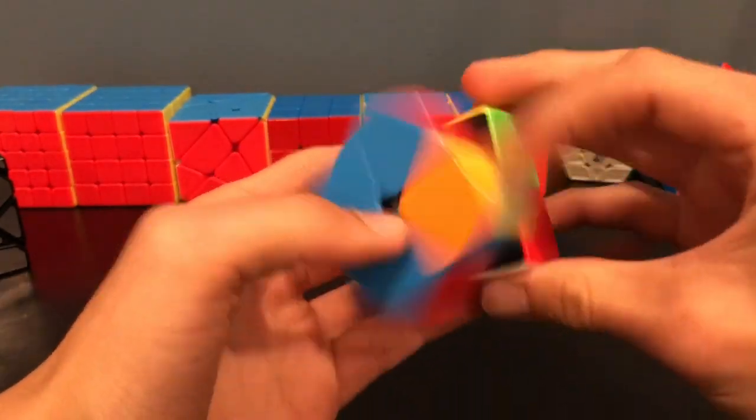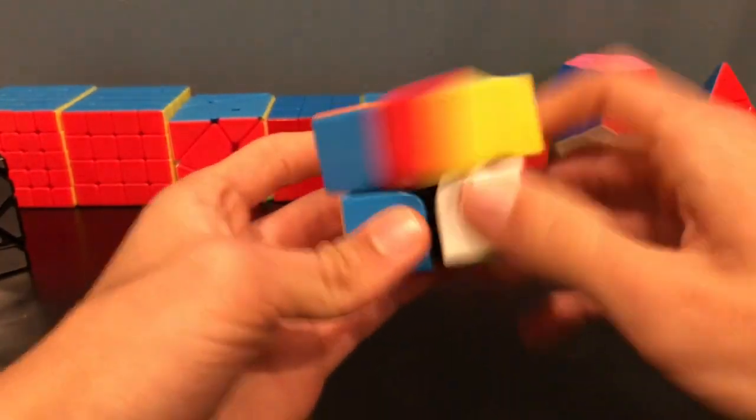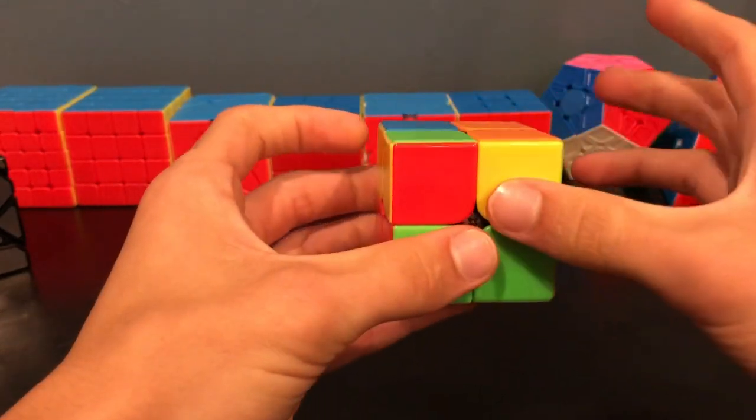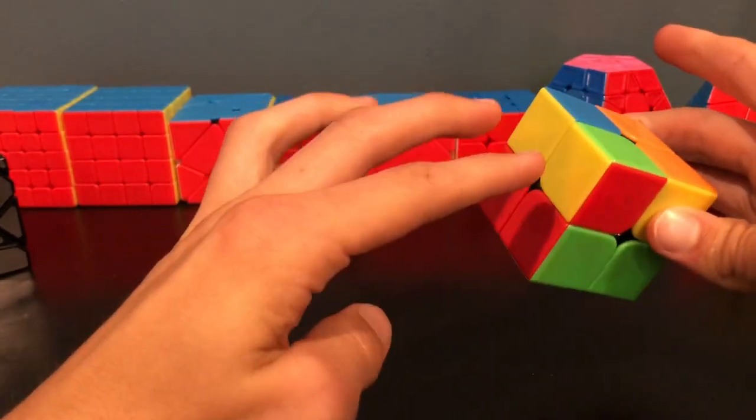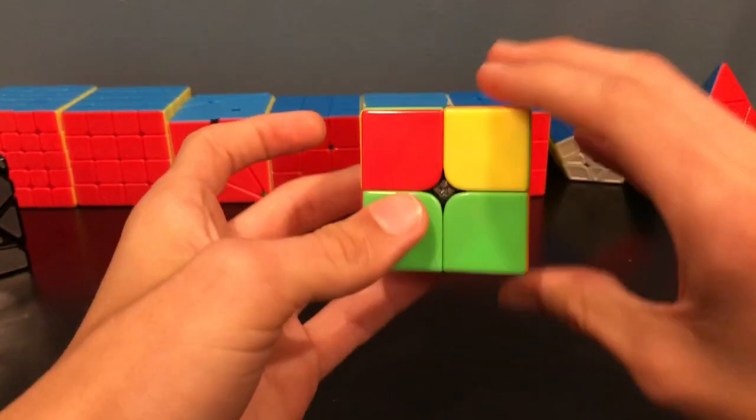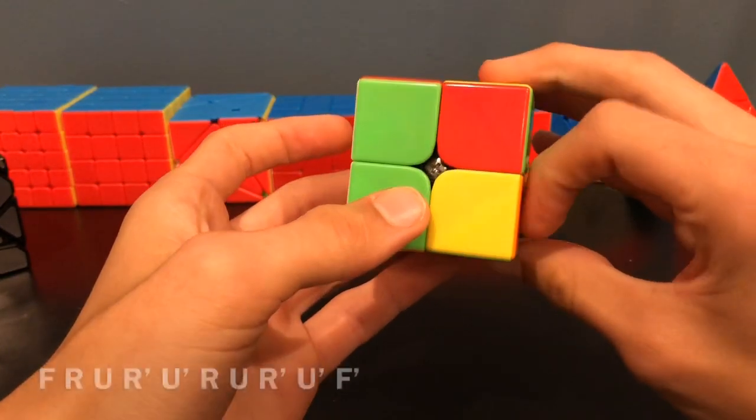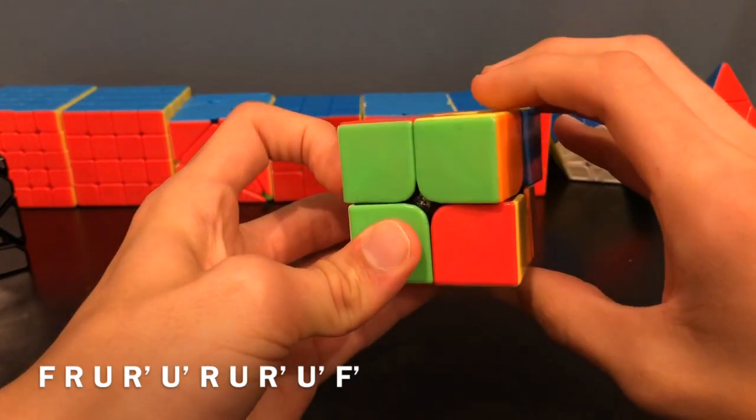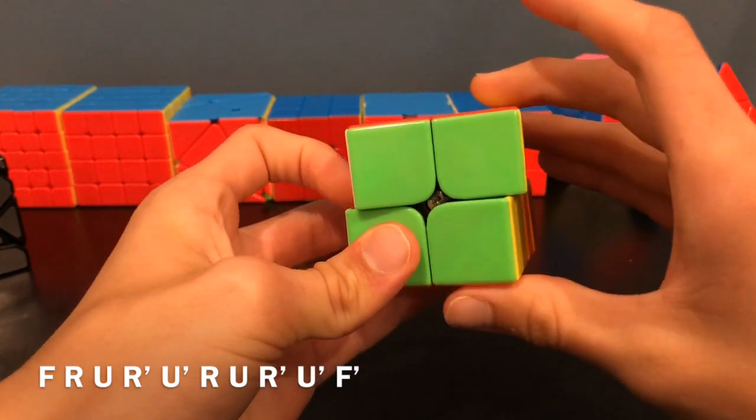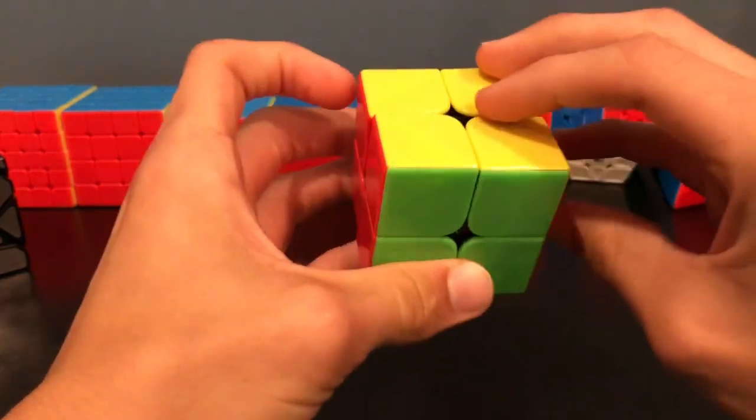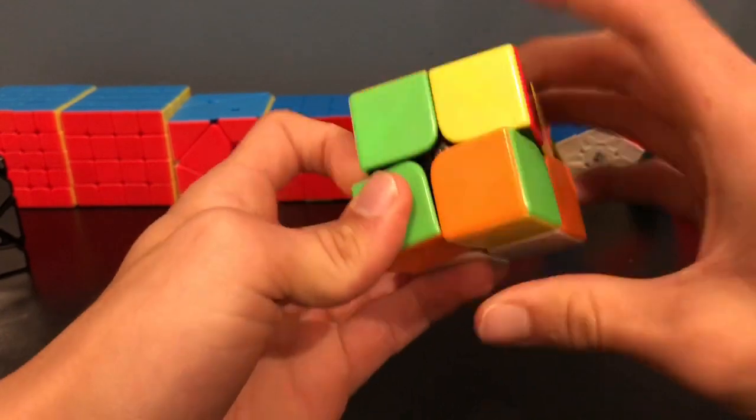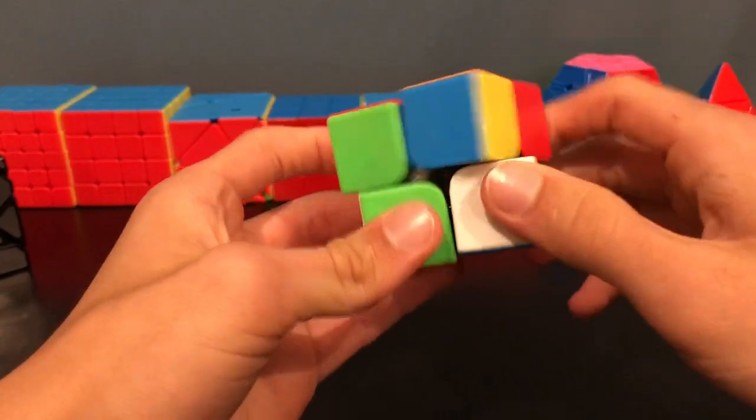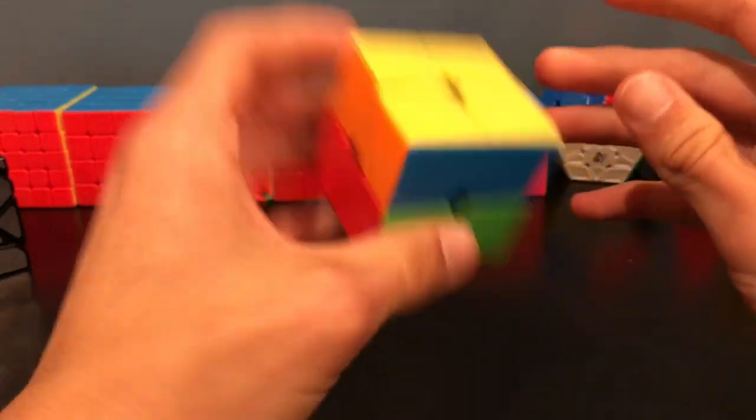Now, this next one is very similar. So, this is where you have yellow facing here, so the yellow is facing out, and then these two are facing the same way. So, you will do F, R, U, R prime, U prime, R, U, R prime, U prime, F prime. See? So, it's really just the same thing, but you do it twice. So, F here, there, and you're done.